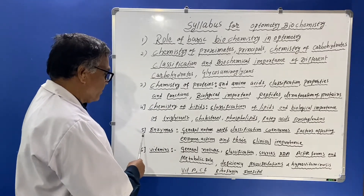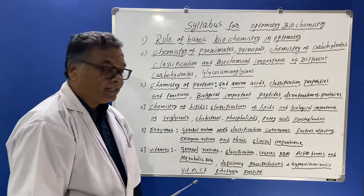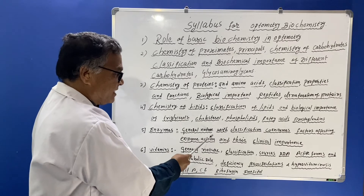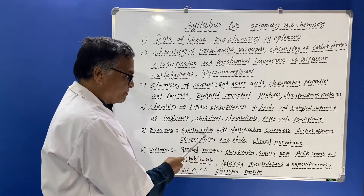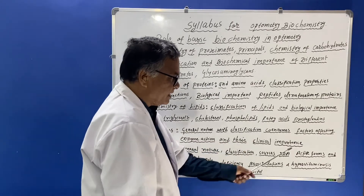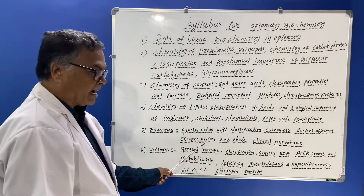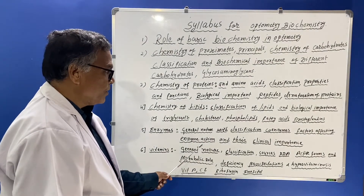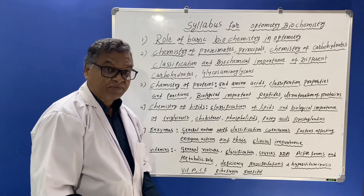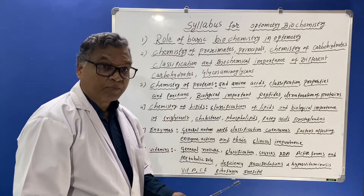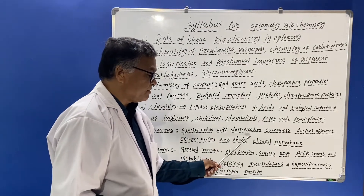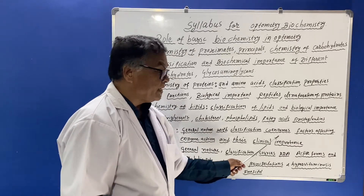The fifth chapter is enzymes. For optometry students, you have to learn the general nature of enzymes, their classification, coenzymes, and factors affecting enzyme action. You should know how many types and groups of enzymes exist under the classification, and the different types of enzymes under each group. Then coenzymes are also to be studied.